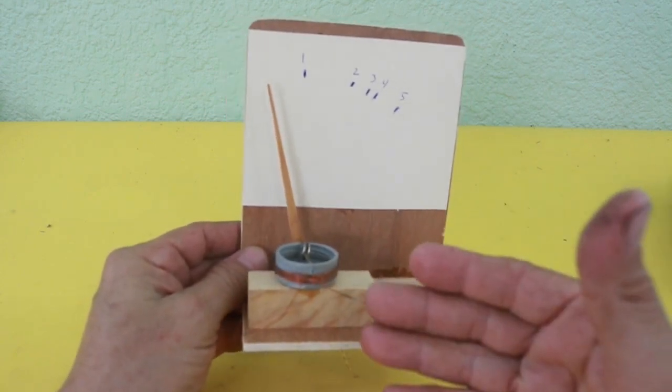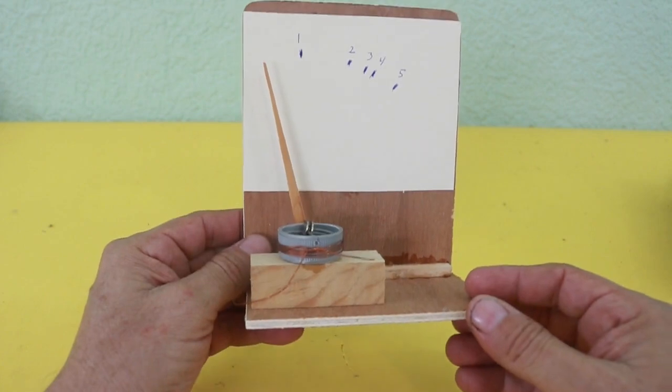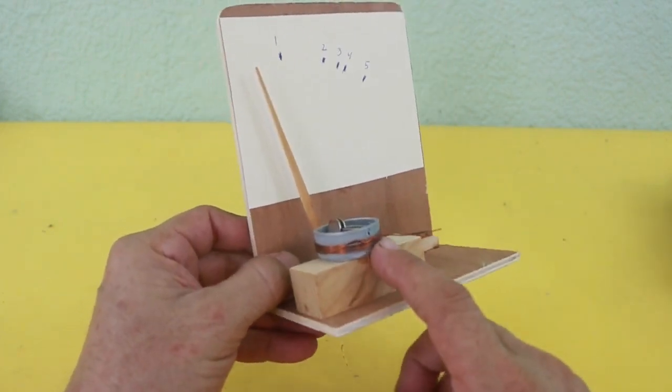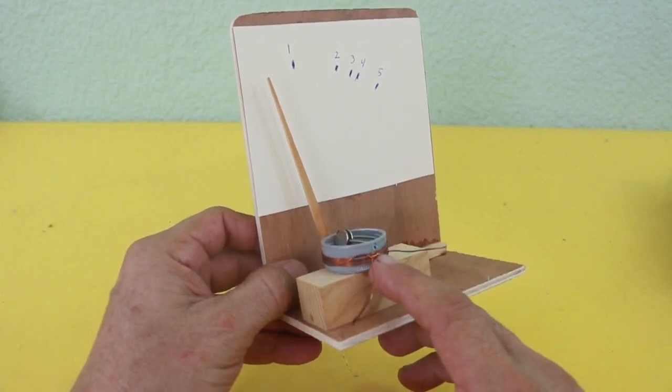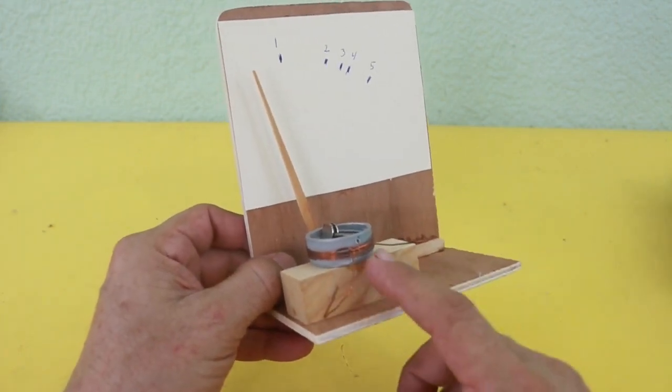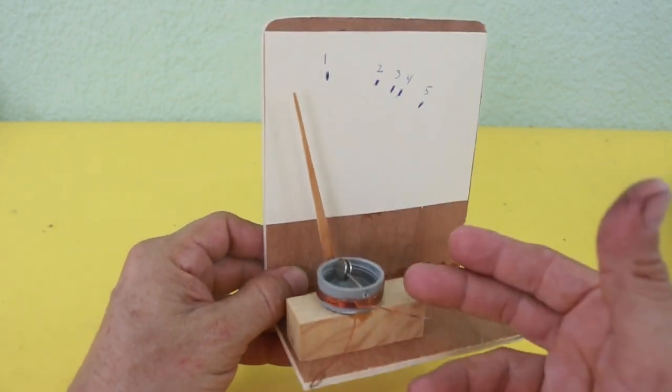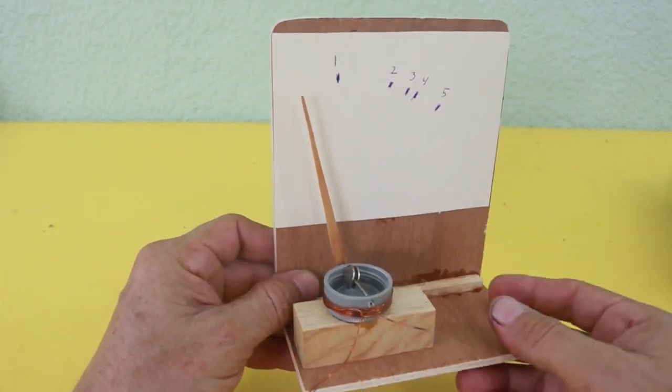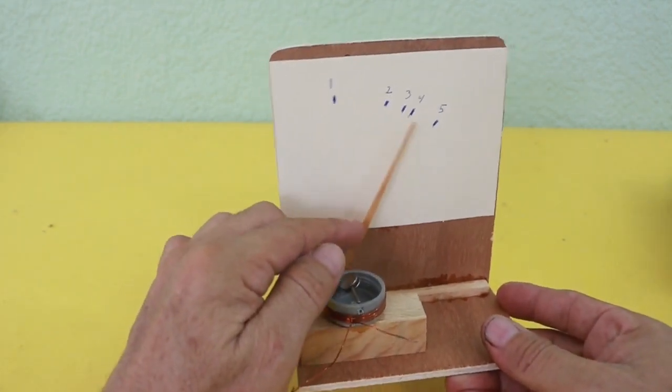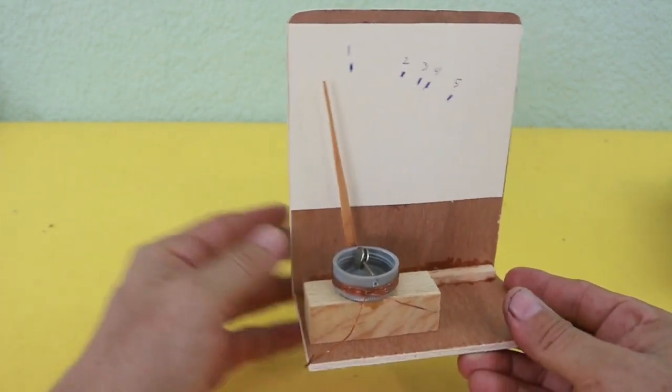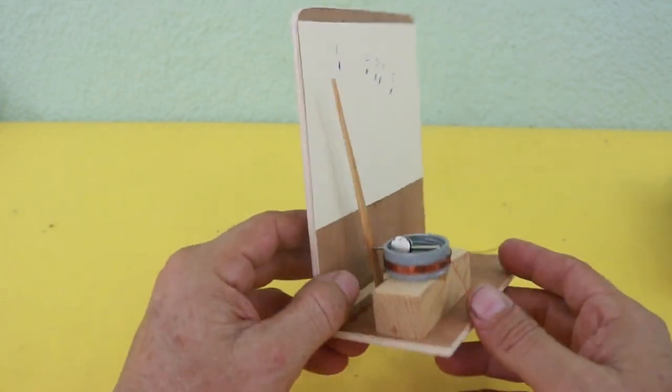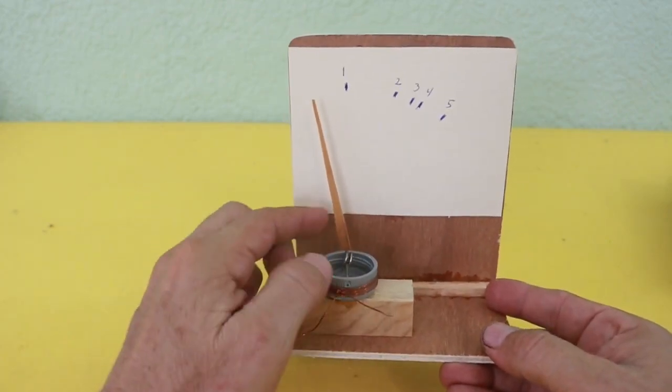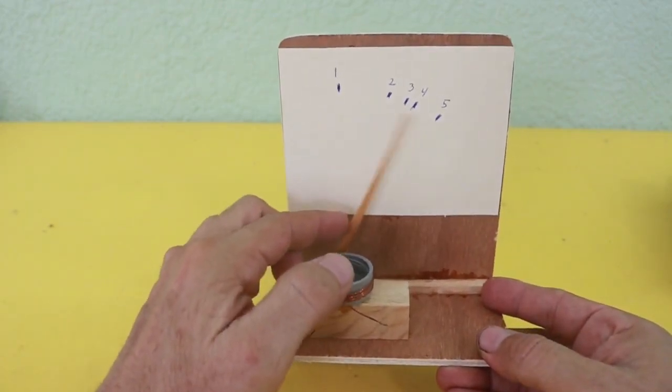You can modify it, for example, to measure smaller currents. You need to use a coil with more turns, because with more turns you have a higher magnetic field with the same current. Therefore, the needle will move using less current. Also, you can make it with less weight in order to make it easier to move the needle.